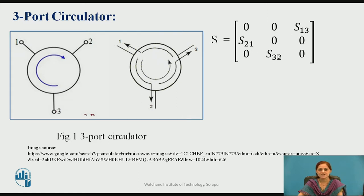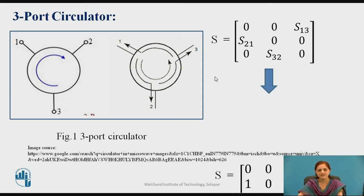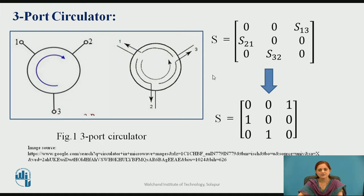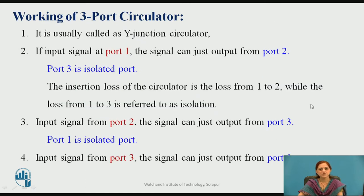Only these parameters are present; other parameters are equal to 0, because if one port is the input, the next clockwise port is the output, and the remaining third port is isolated. Therefore, the scattering matrix for this circulator becomes [0 0 1 / 1 0 0 / 0 1 0]. It is usually called a Y-junction circulator because it looks like the letter Y.